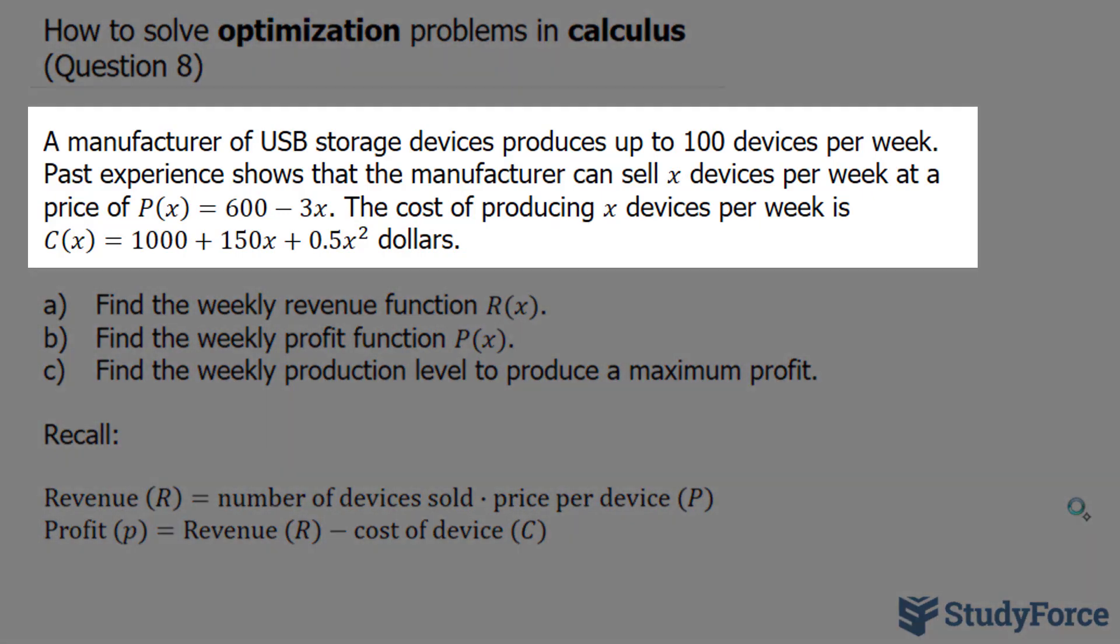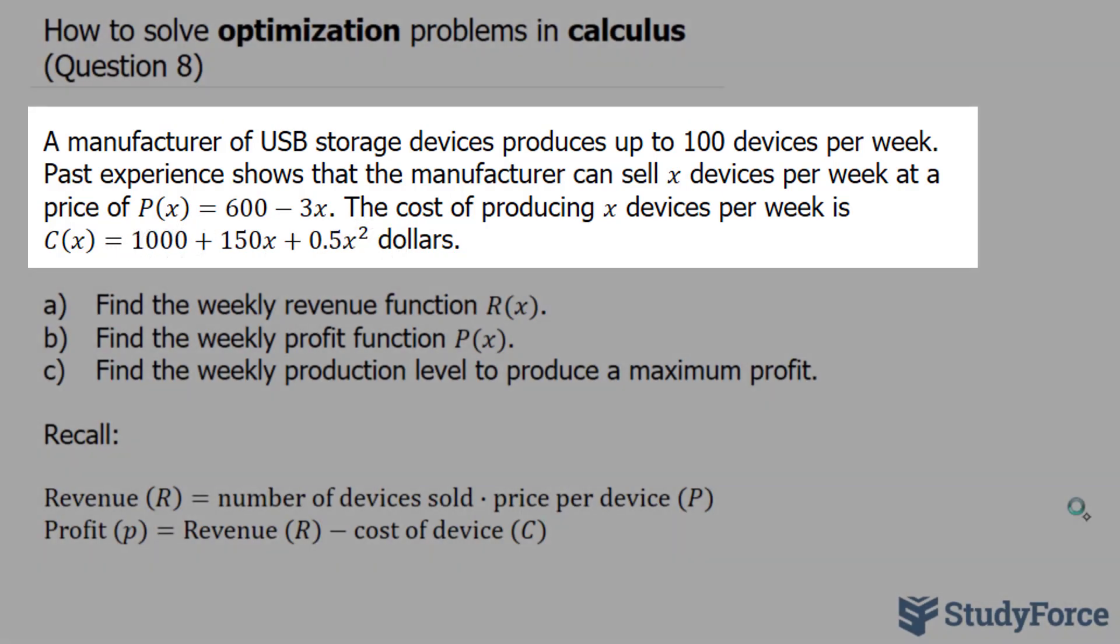A manufacturer of USB storage devices produces up to 100 devices per week. Past experience shows that the manufacturer can sell x devices per week at a price of P(x) = 600 - 3x. The cost of producing x devices per week is represented as C(x) equal to this expression in dollars.